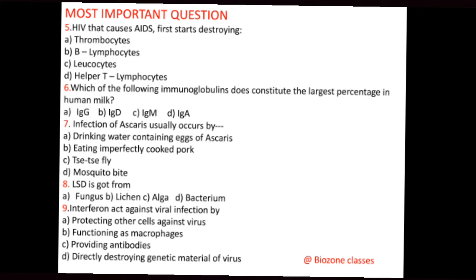Question number 7: Infection of Ascaris usually occurs by — A. Drinking water containing eggs of Ascaris, B. Eating imperfectly cooked pork, C. Tsetse fly, D. Mosquito bite. Ascaris infection in the body mainly occurs by drinking contaminated water. The correct answer is A, drinking water containing eggs of Ascaris.